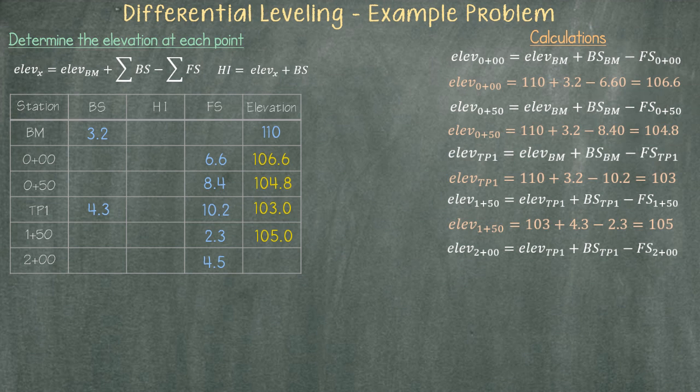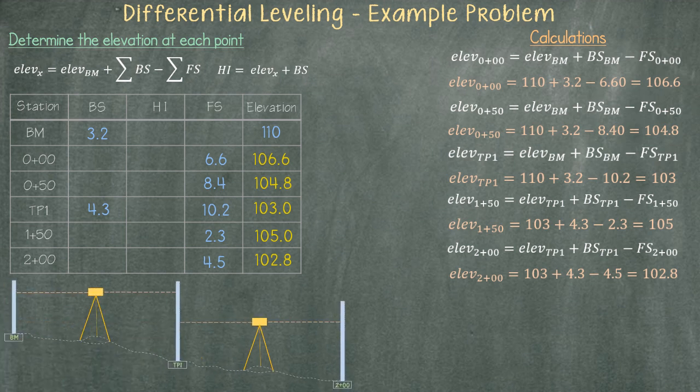That is how you calculate each elevation. But what if the question was to find the elevation at station two plus zero zero only? We would not have to do all this work. Instead, we could just sketch a diagram similar to this, along with the given information.